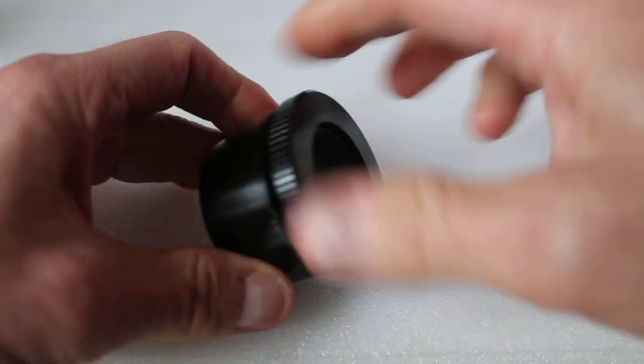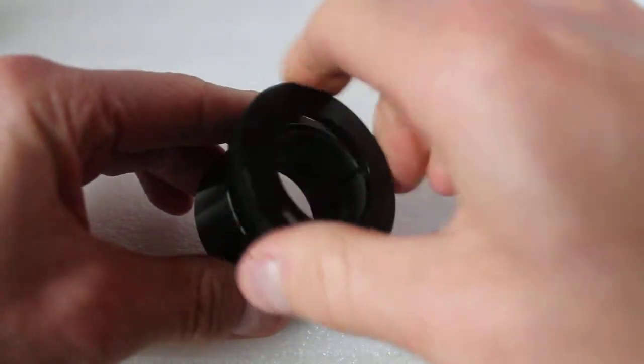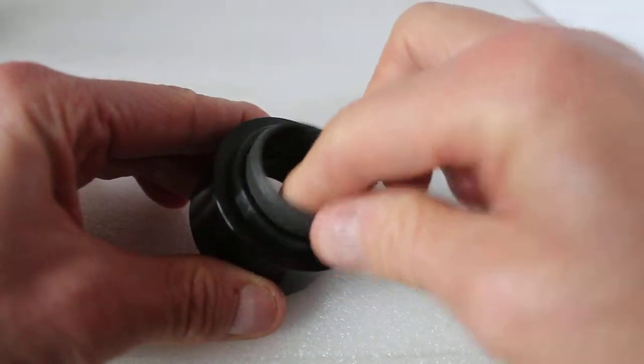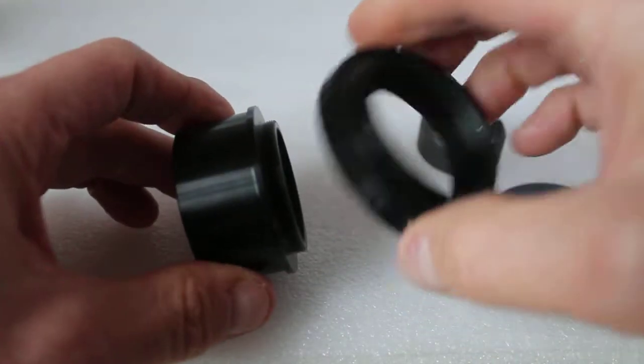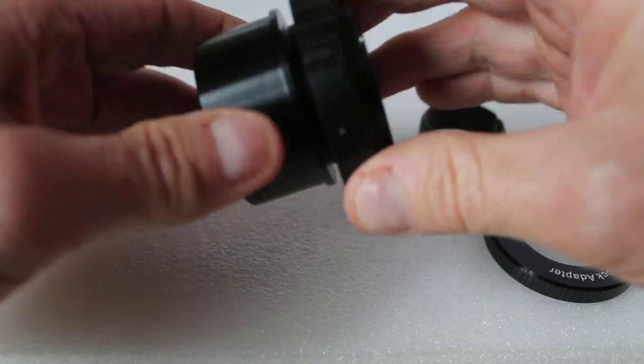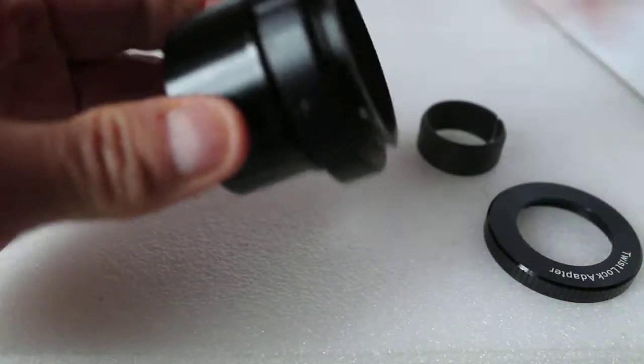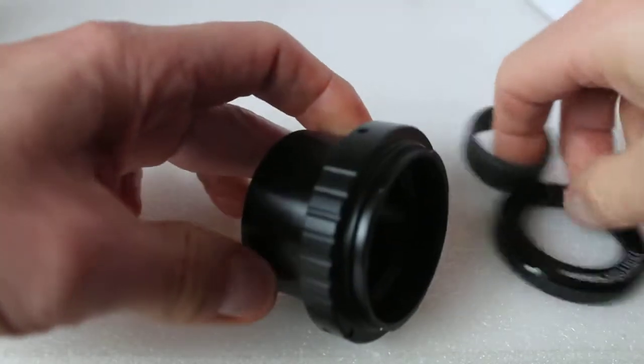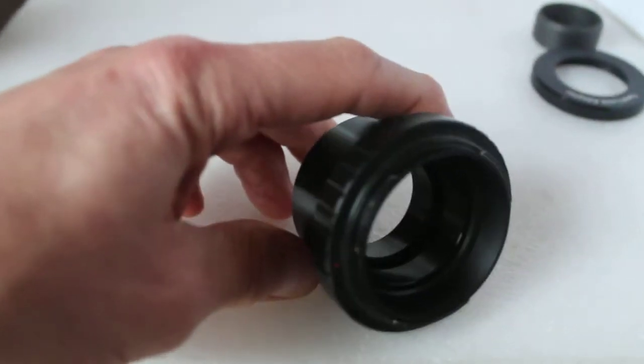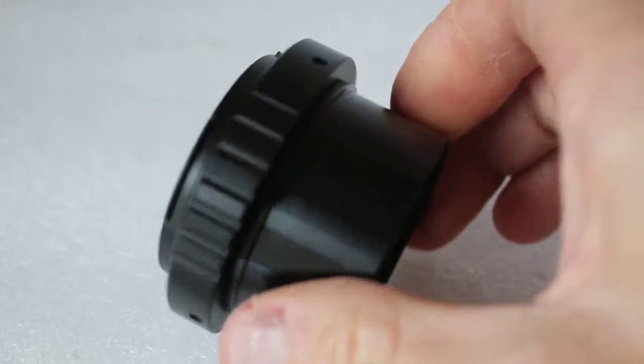...and the inner ring. You can then get a T ring for whichever camera you use, simply screw it on there, and now what you're left with is a two-inch T adapter for astrophotography.